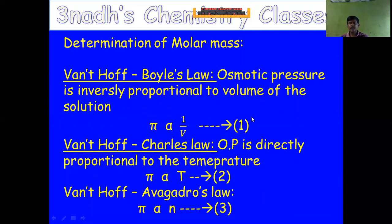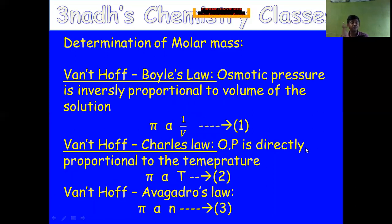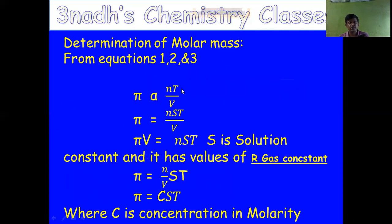According to Van't Hoff-Boyle's law, osmotic pressure (π) of a dilute solution is inversely proportional to its volume: π ∝ 1/V. According to Van't Hoff-Charles's law, osmotic pressure is directly proportional to the absolute temperature: π ∝ T. According to Van't Hoff-Avogadro's law, osmotic pressure is directly proportional to the number of moles (n): π ∝ n. Combining all three, π ∝ nT/V.